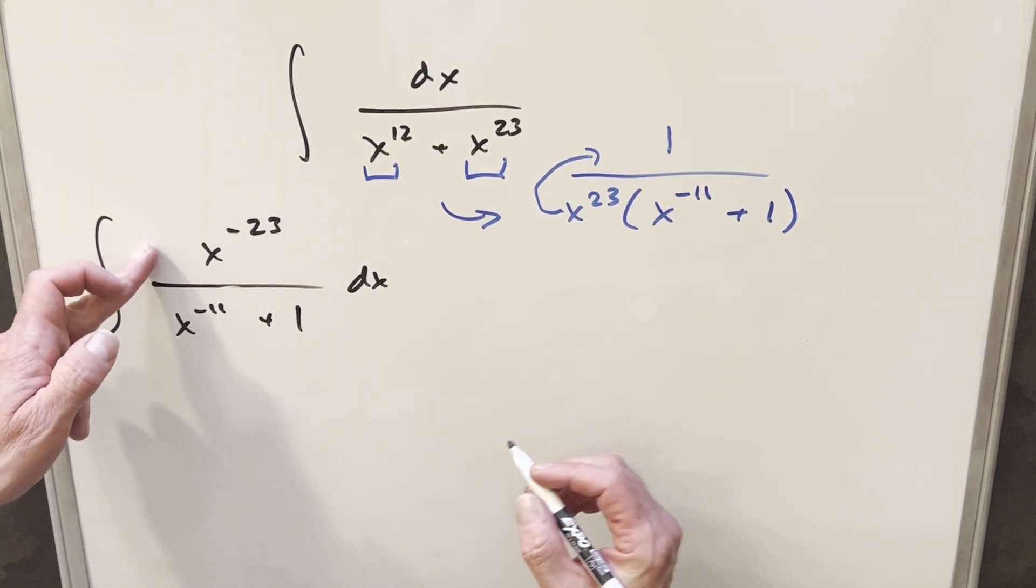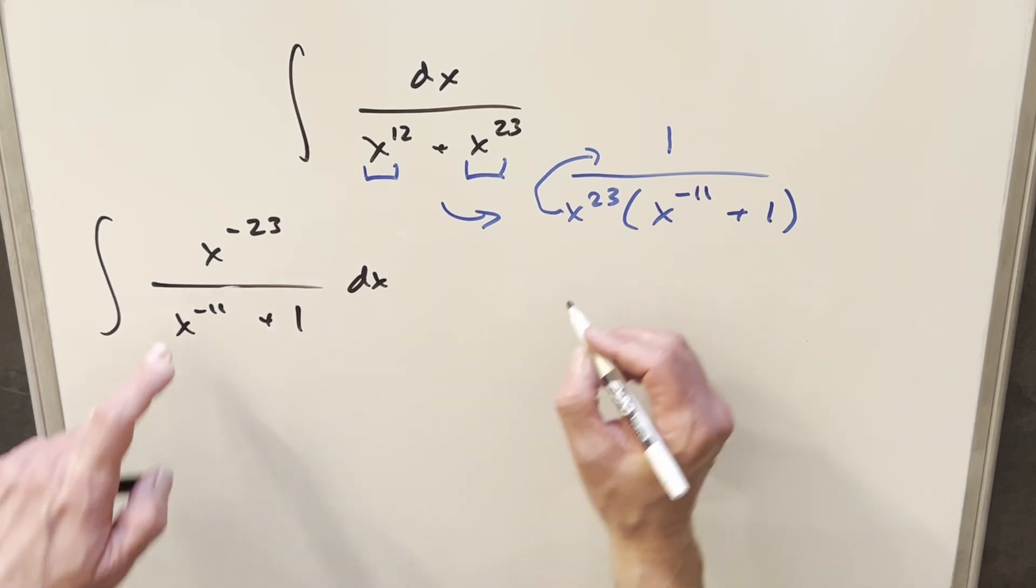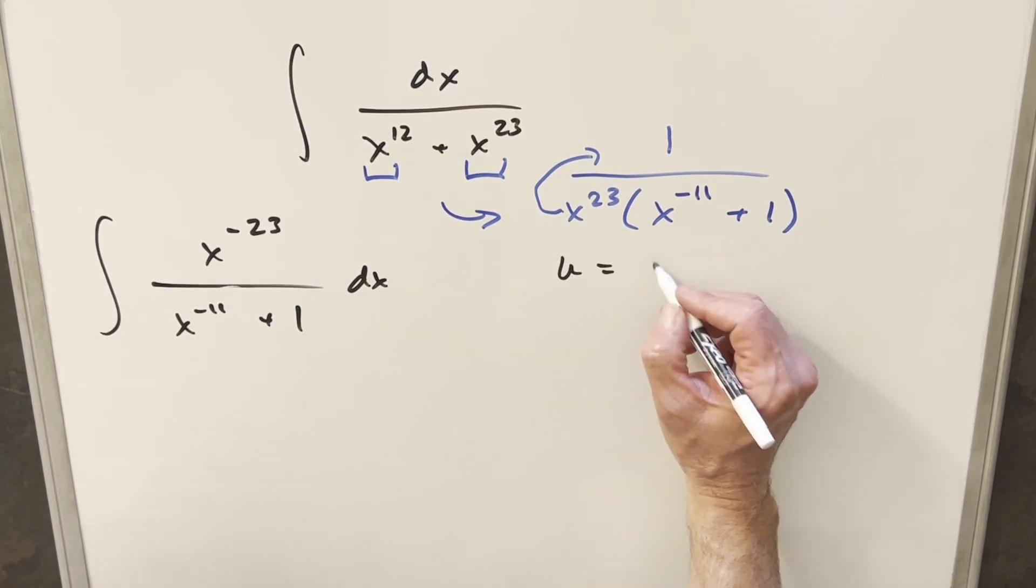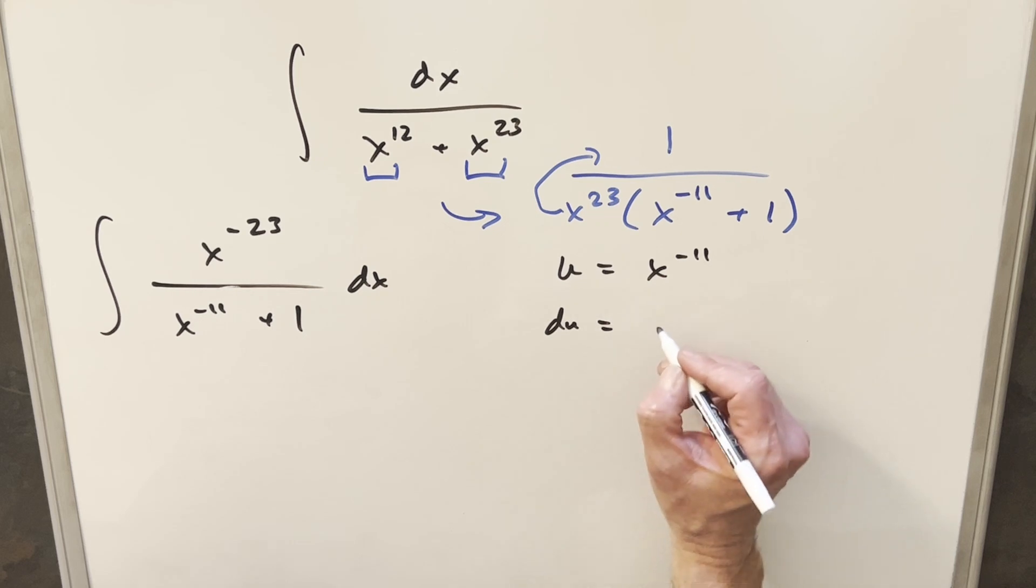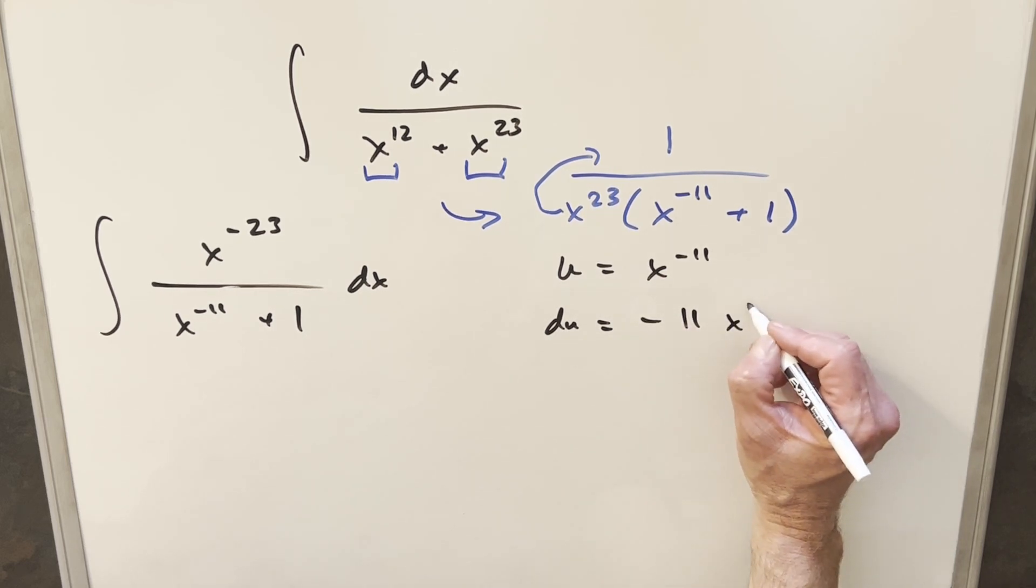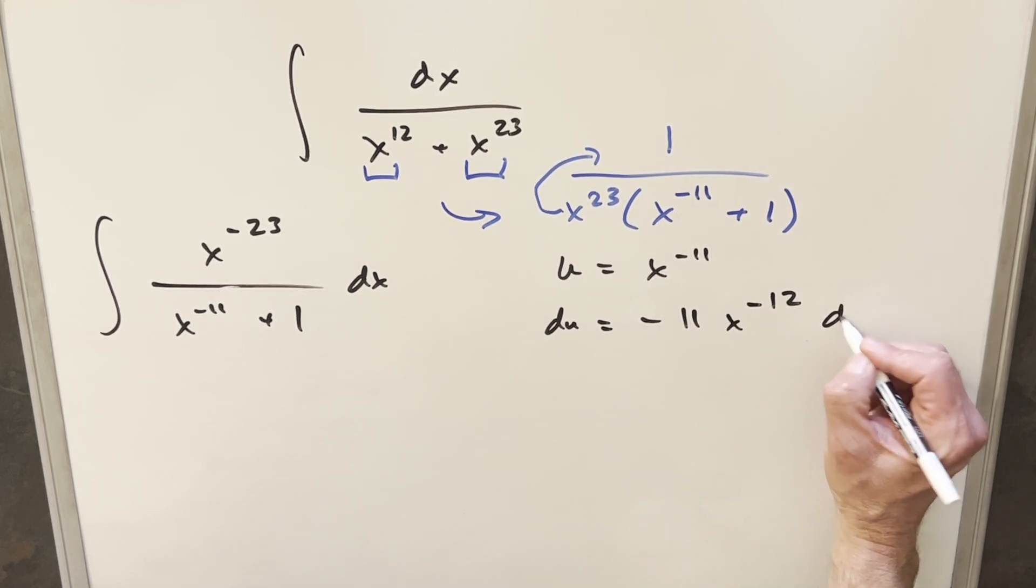And then now what I'll do is go ahead with the u substitution. I'm going to make my u just for the x to the minus 11. So I'll say u equals x to the minus 11. I'll take a derivative. du is going to be minus 11x to the minus 12 dx.